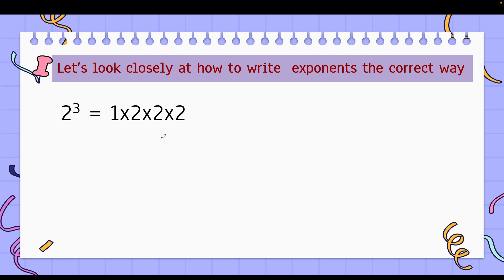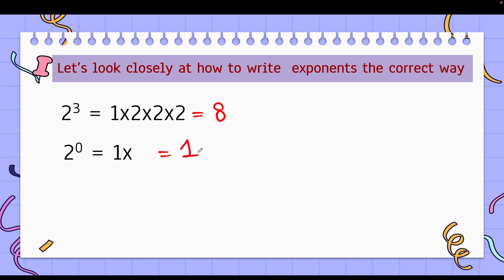Let's look at how to write exponents the correct way. When I say 2 to the power 3, you might write 2 × 2 × 2, but the correct way is 1 × 2 × 2 × 2, because any number multiplied with 1 doesn't change the value. Now similarly, if I say 2 to the power 0, I take 1 multiplied with 2 getting multiplied 0 times — meaning there is nothing there. It's just 1.